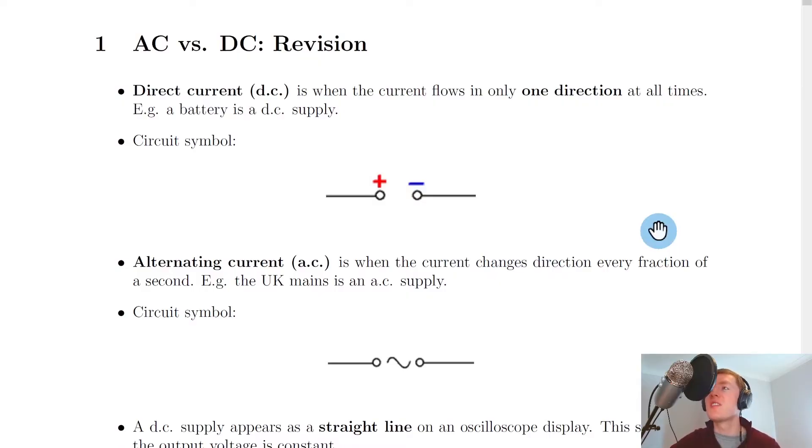Now the theory we're about to look at on AC versus DC is stuff that you should have seen in National 5 physics. We start with a definition of direct current, also known as DC, and this is when the current flows in only one direction at all times. For example, a battery is a DC supply.